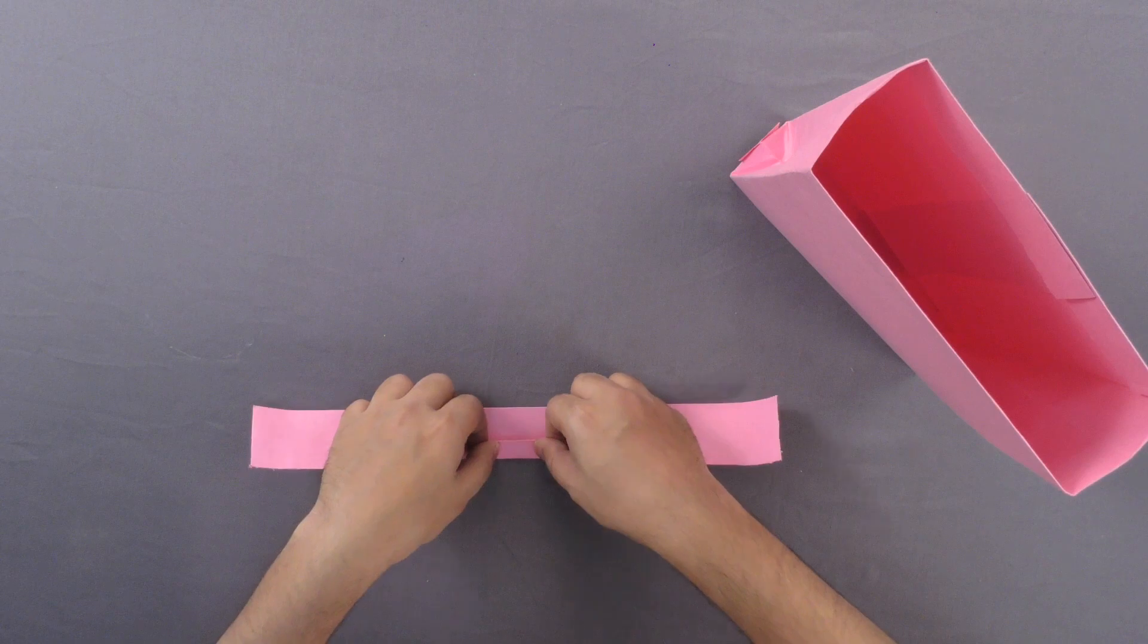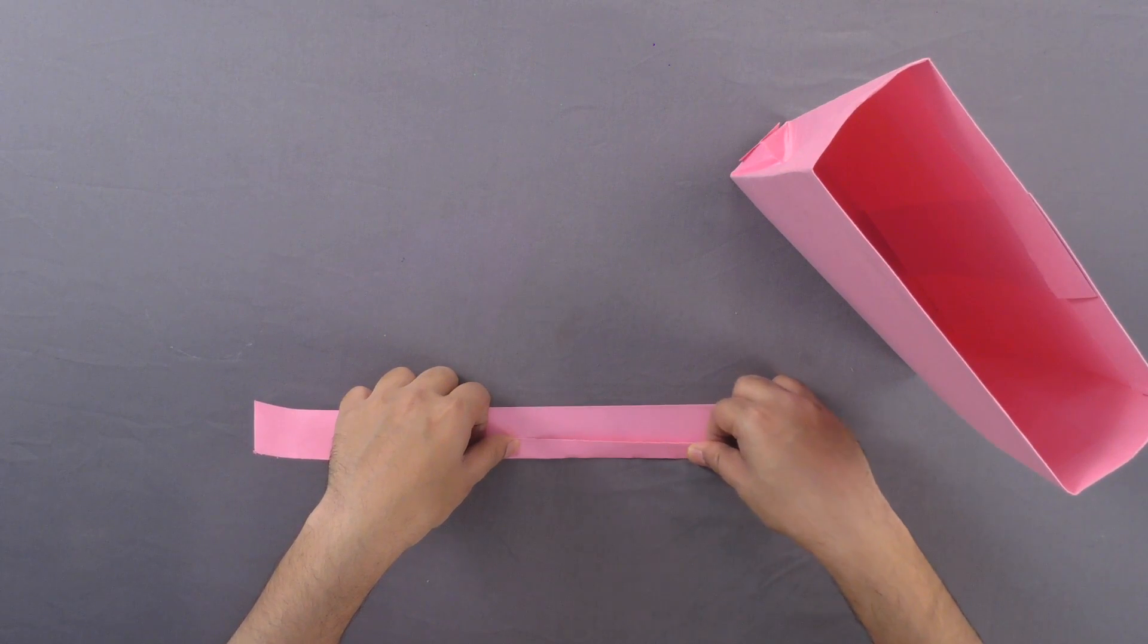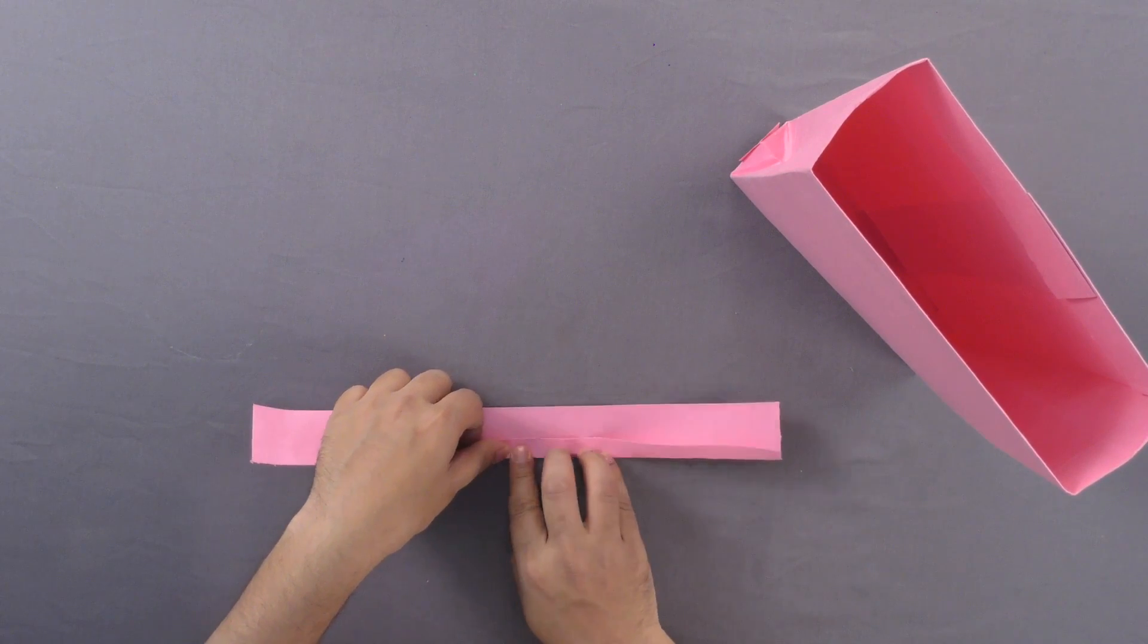Now double fold two long strips of chart paper separately to make two handles.